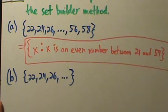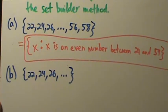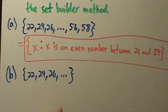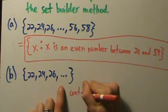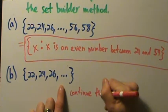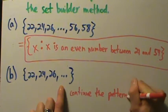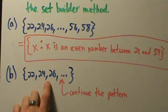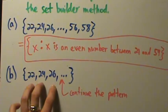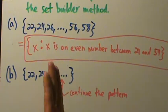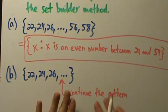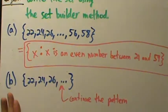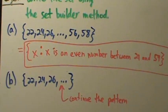Now let's do part B. Part B has 22, 24, 26, dot dot dot, and it just keeps going. These dots mean continue the pattern — the same even number pattern as part A, increasing by 2. But unlike part A, which stopped at 56, 58, part B has no stopping point. We're going on forever and ever.